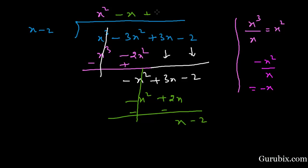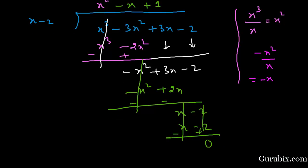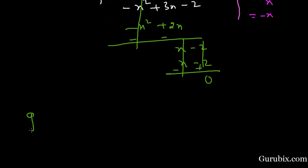x minus 2 goes 1 time. We write x minus 2 and change the sign, so this term is cancelled out and the remainder is 0. Therefore, g(x) equals x squared minus x plus 1. This is the solution of the question. Thank you.